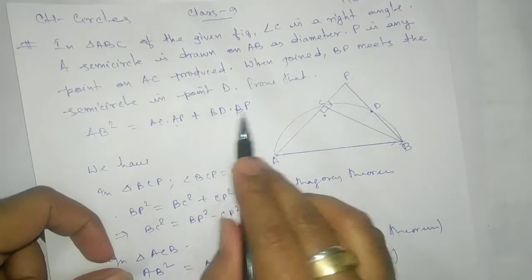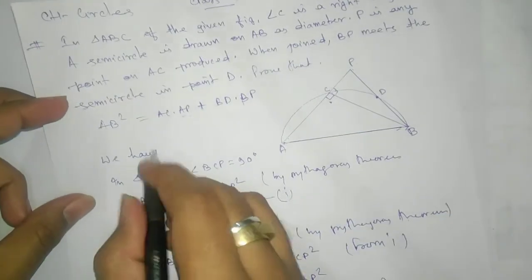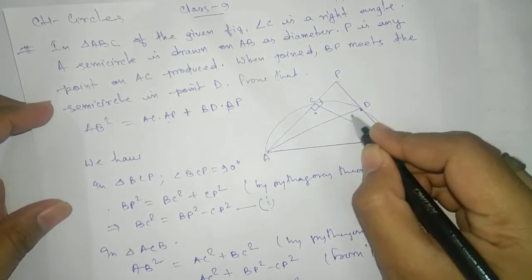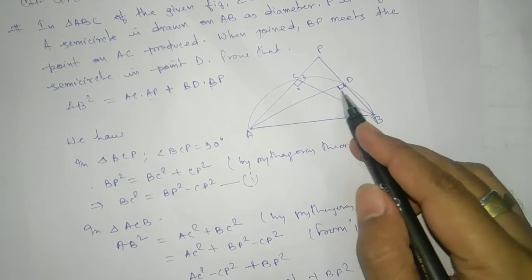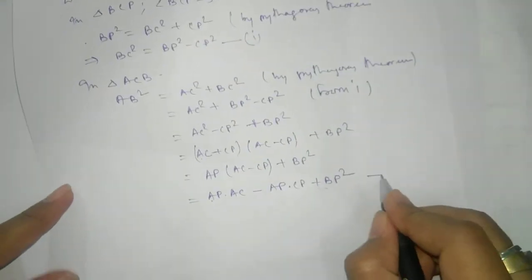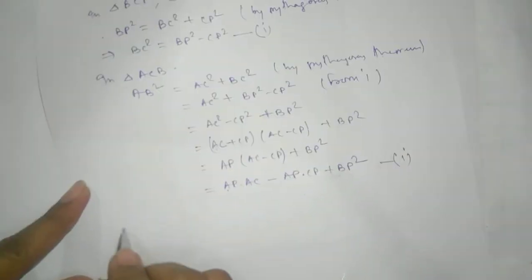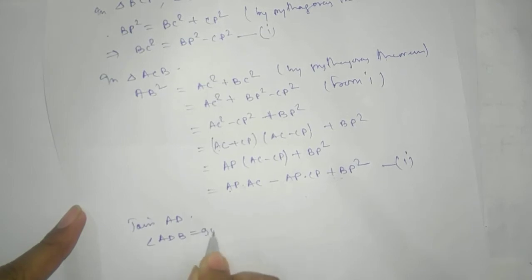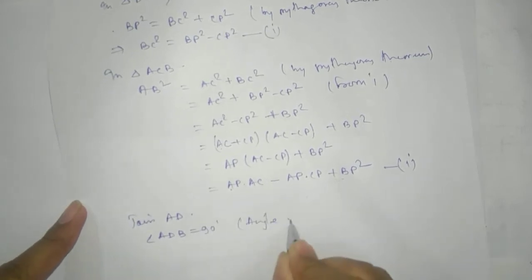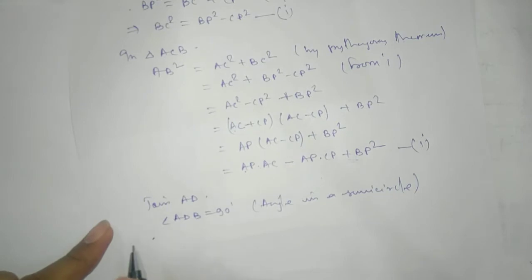To get the remaining result, we join A to D. Since AB is the diameter and D is a point on the semicircle, angle ADB = 90 degrees, by the theorem that the angle in a semicircle is 90 degrees. We use this to establish similarity between triangles.